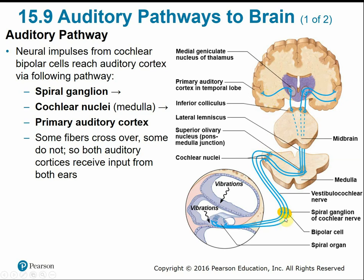Some fibers cross over along the auditory pathway, but not all of them. This ensures that both hemispheres receive input from both ears, helping us to localize sounds and tell which side a sound is coming from.